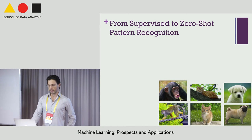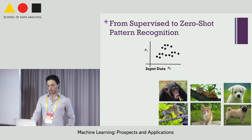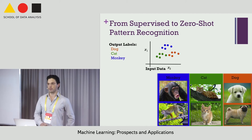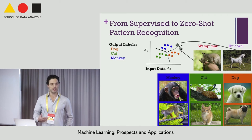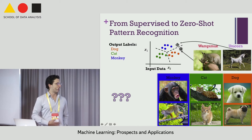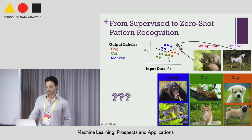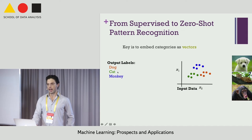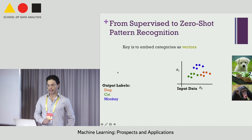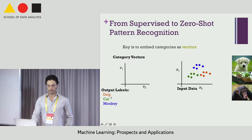Let's put zero-shot learning in context with the normal supervised learning pipeline. We get data in a feature space, someone provides annotations giving us class labels, and we learn a supervised classifier that divides the feature space by category. If new categories appear, their images live in the same feature space, but the classifier has no model for them. The key idea in zero-shot learning is to embed categories as vectors — going from a discrete output label space to a vector space of categories.